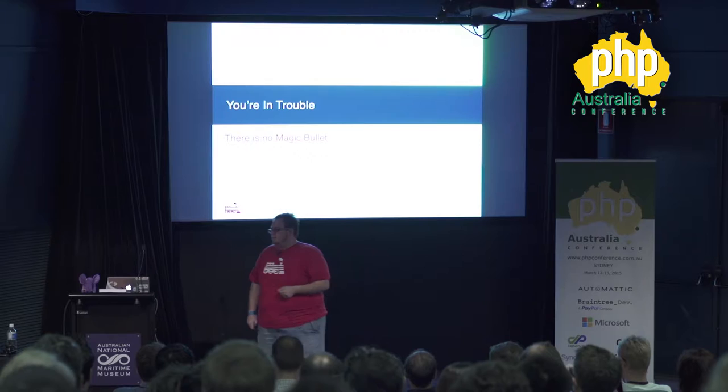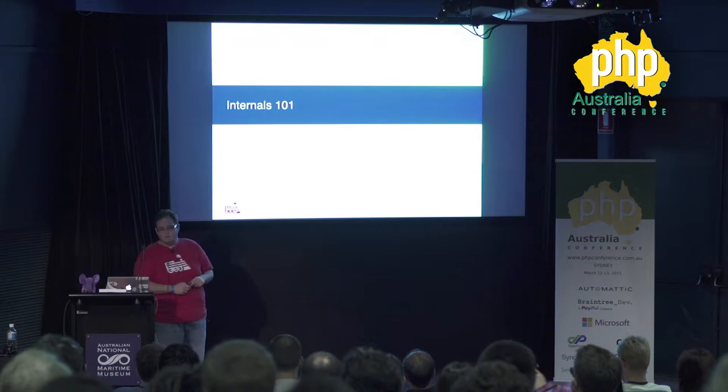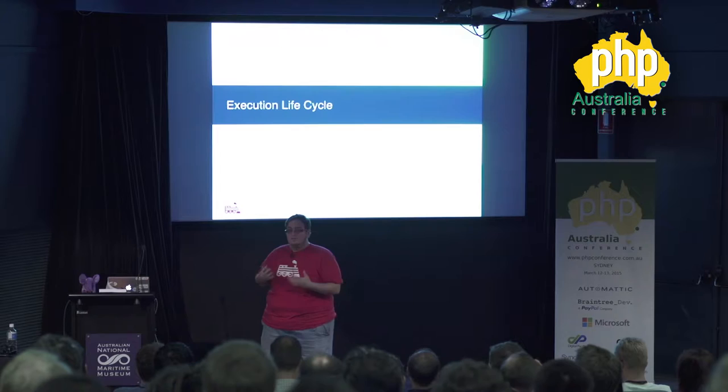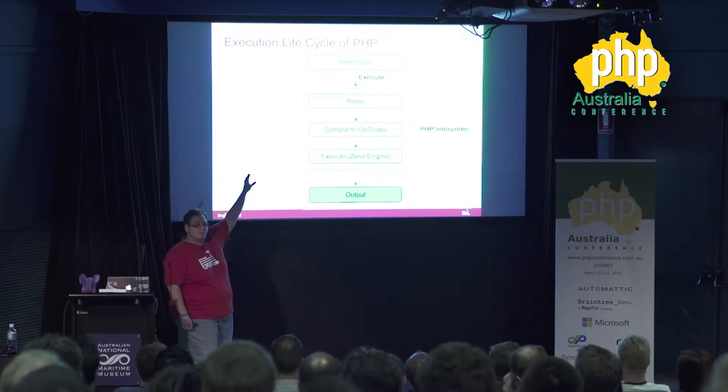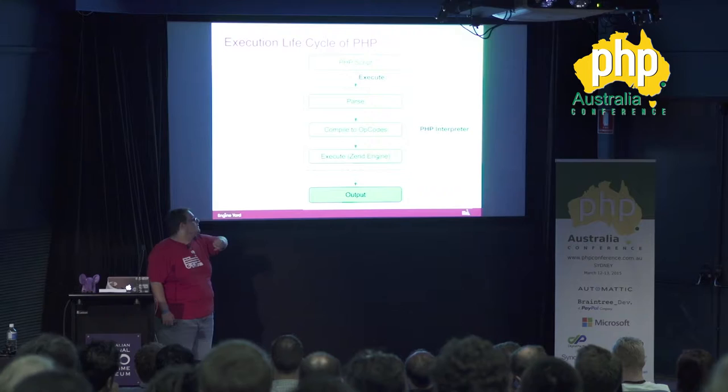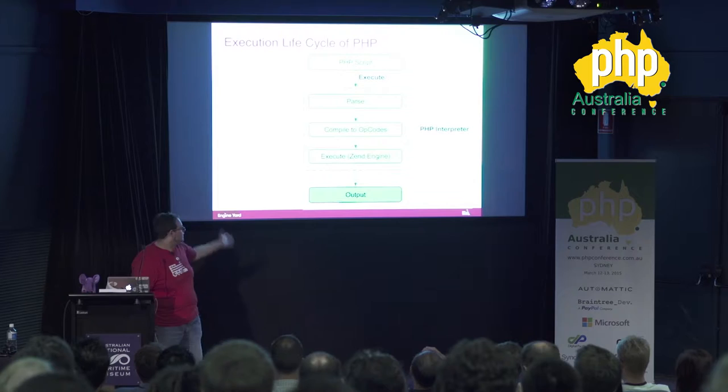Let's take a look at what PHP is doing under the hood — Internals 101. The execution lifecycle of PHP: people say PHP is not a compiled language, but this is not strictly true. It is an interpreted language, but there is a compilation process that happens every single time you run a script. You have your PHP script on disk, you execute it through the PHP interpreter, it gets tokenized, compiled into opcodes, and then run on the Zend Engine, which is a virtual machine. Then we have some output.